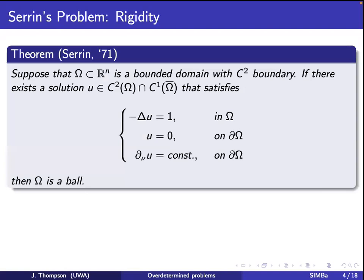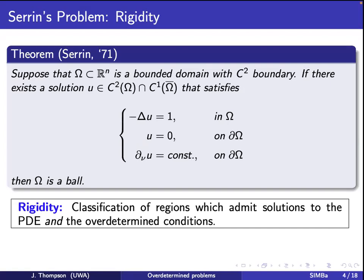In 1971, James Serrin looked at this problem and proved that if you have a solution satisfying all three conditions, then the domain omega has to be a ball. This problem opened up the entire area of over-determined PDEs. I'll refer to this kind of theorem as a rigidity result — meaning some kind of classification of the regions which admit a solution to the PDE and the over-determined conditions.